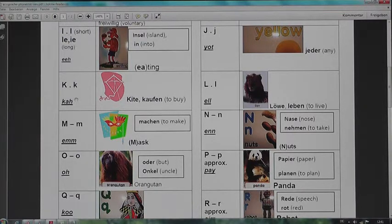K, in a word like kite, kaufen, to buy. L, in a word like lion, in deutsch Löwe, leben, to live. M, in a word like M, in mask, machen, to make.